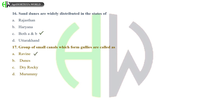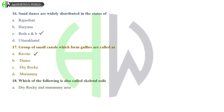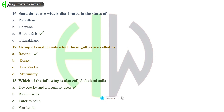Which of the following is also called skeletal soils? Options: Dry rocky and Murumi area, Ravine soils, Laterite soils, or Wetlands. And the correct answer is Dry rocky and Murumi area.